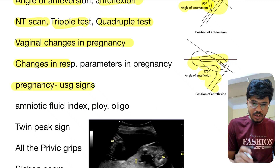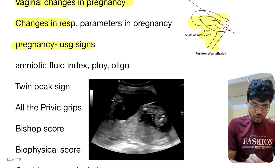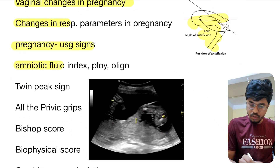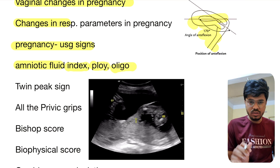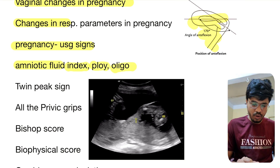Pregnancy USG signs, amniotic fluid, amniotic fluid index, polyhydramnios, oligohydramnios — all the causes. Very very important.